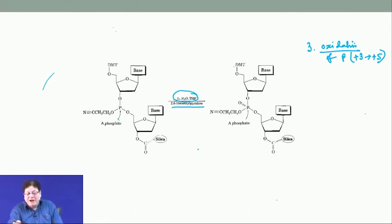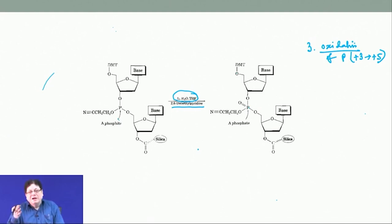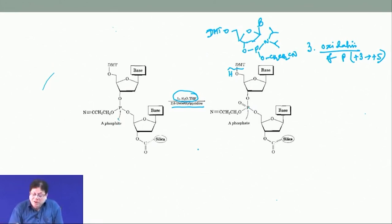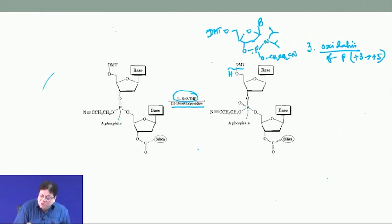To extend further, take the DMT off to generate the free OH, then add another DMT-protected phosphoramidite — where the phosphoramidite is attached to the 3′ OH and the 5′ OH is protected as DMT with the cyanoethyl group: O–P–N(isopropyl)2, CH2CH2CN. In presence of tetrazole, tetrazole protonates the amine, the OH attacks the phosphorus, and you get a trinucleotide.